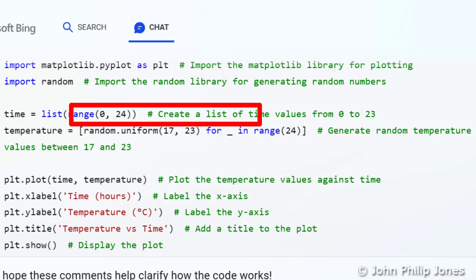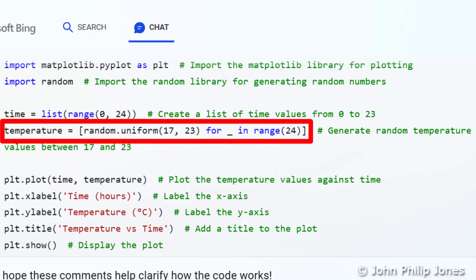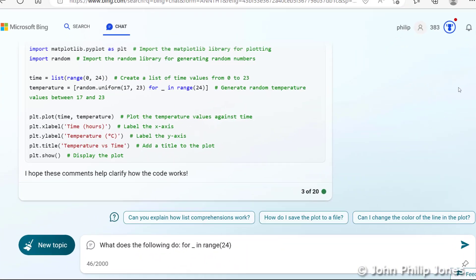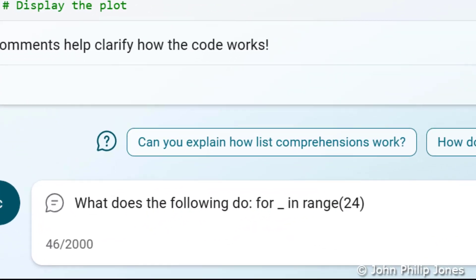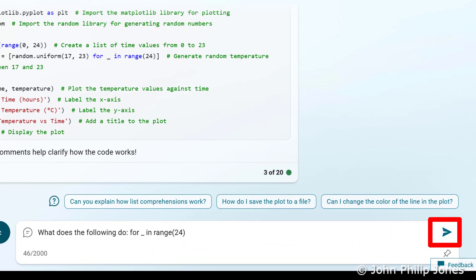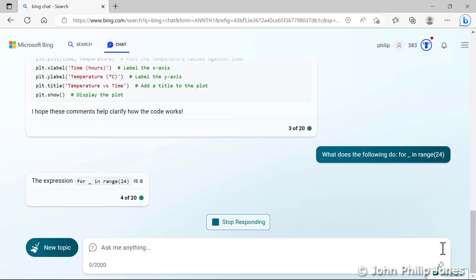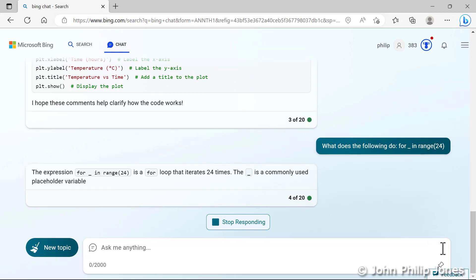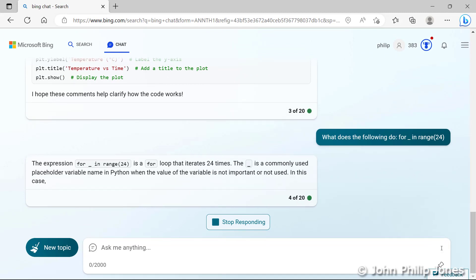Many people would look at this program statement and wonder what this did. Well, you can see here I'm asking Chat to tell me what it does by writing: What does the following do? And then I've wrote out for underscore in range, and in brackets you can see there's 24. So I'll now come here and click on this arrow and let's see what Bing can tell us about this part of the program statement. And here is the answer appearing in front of us.